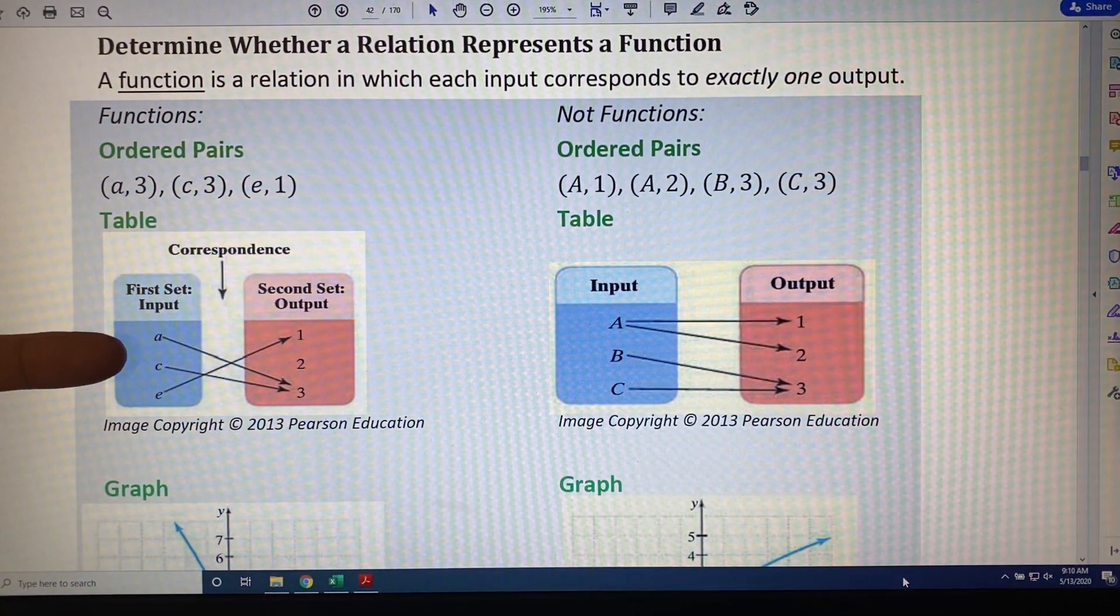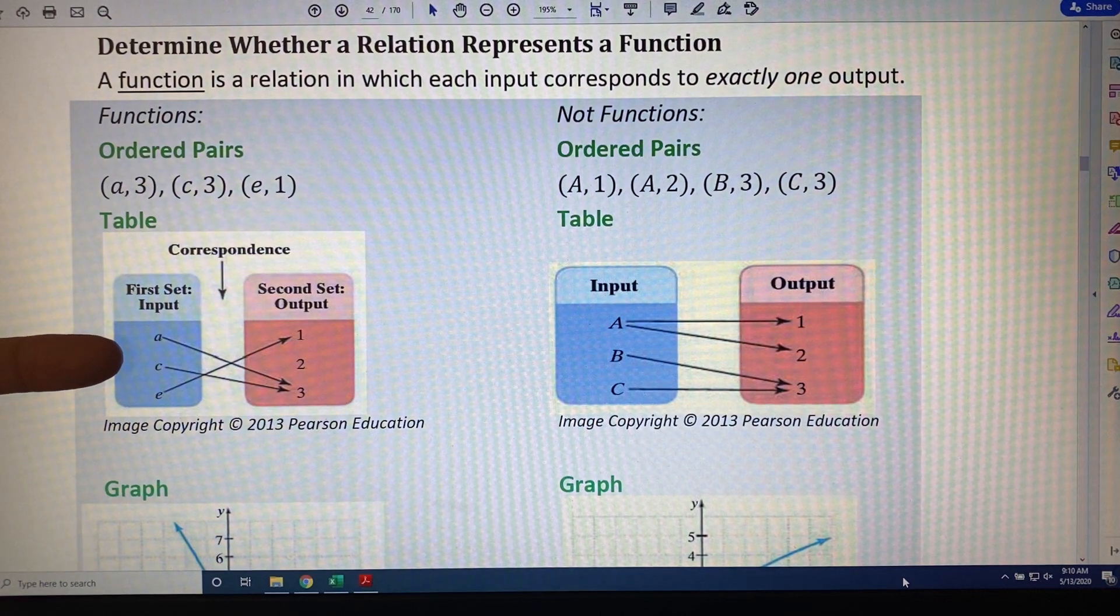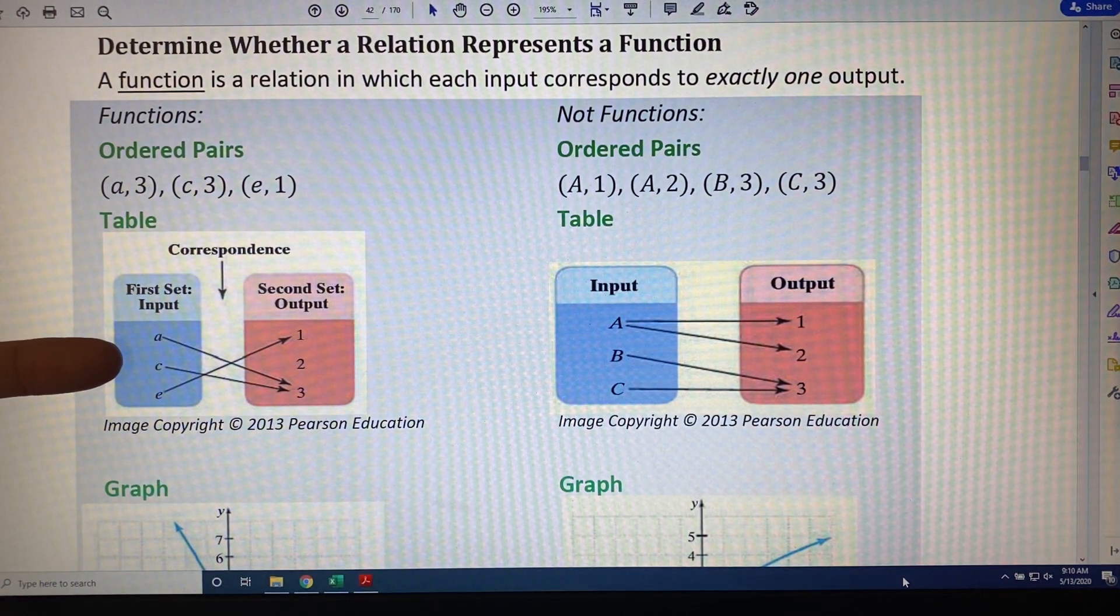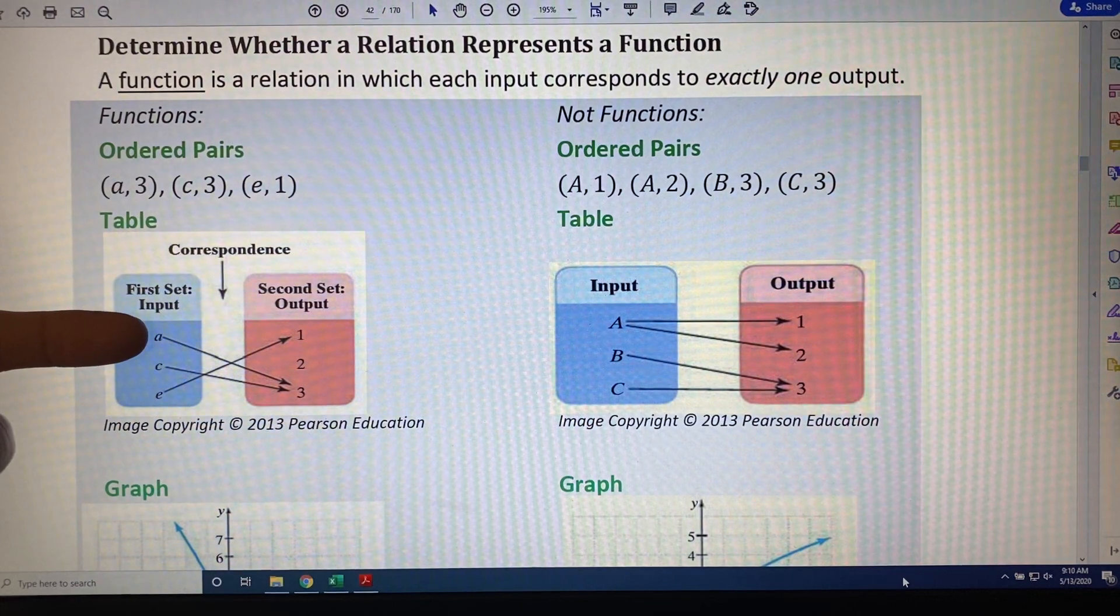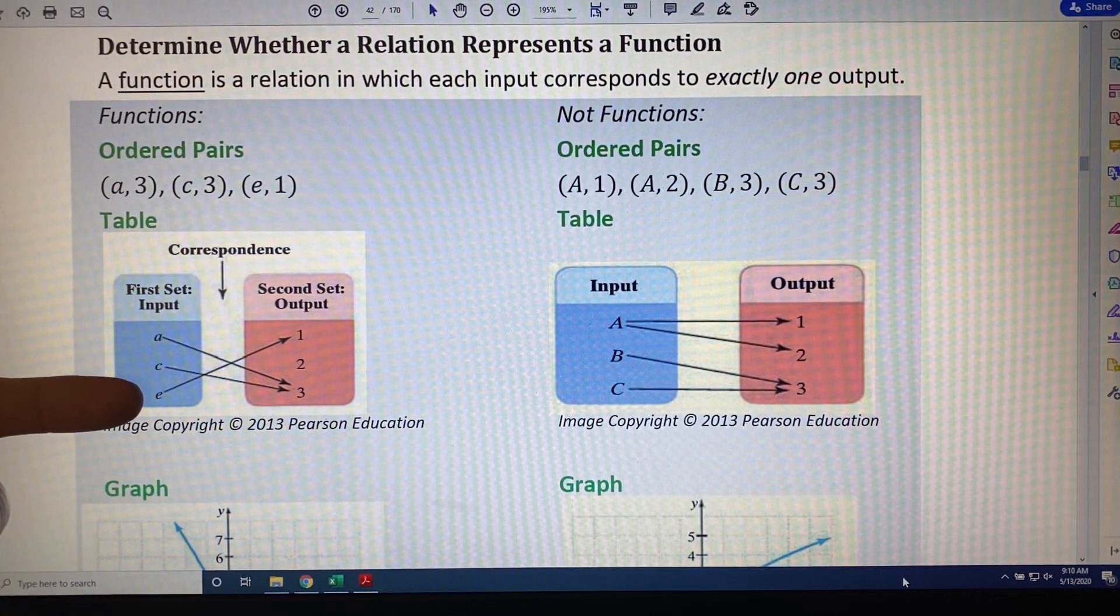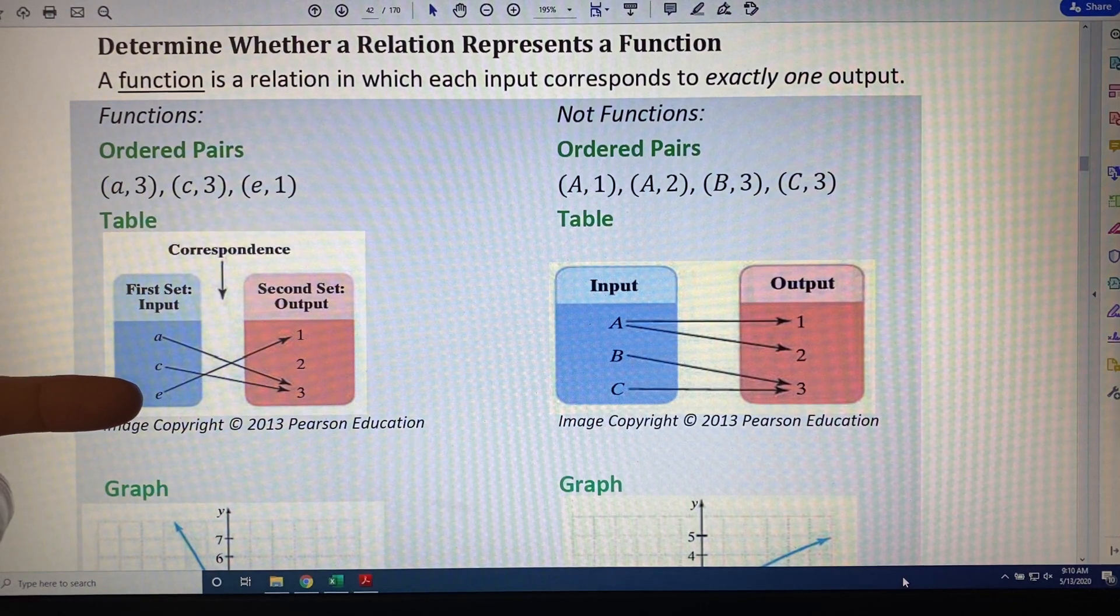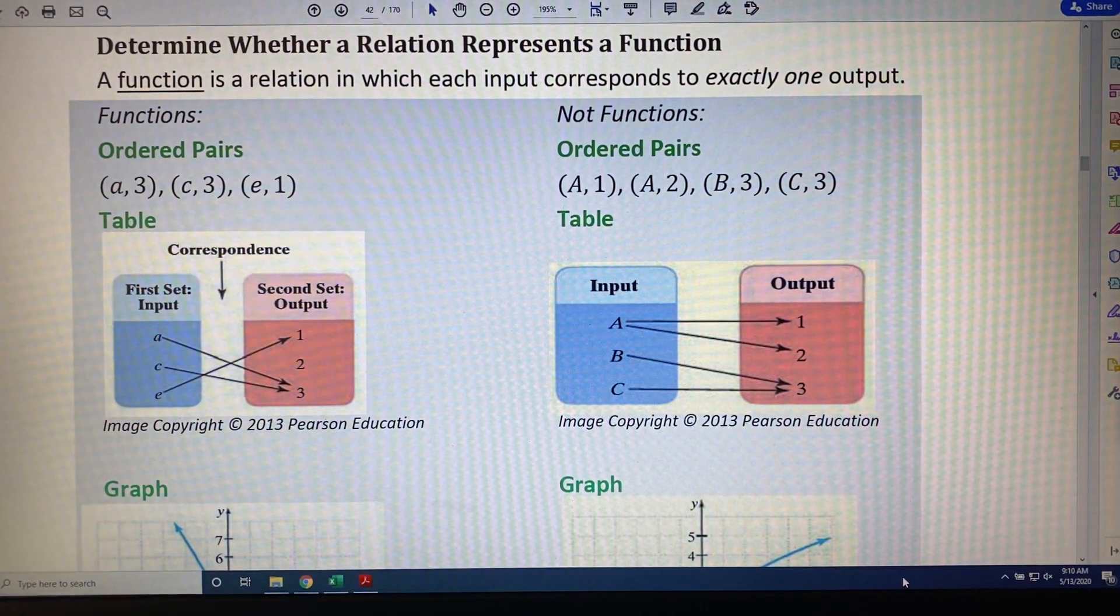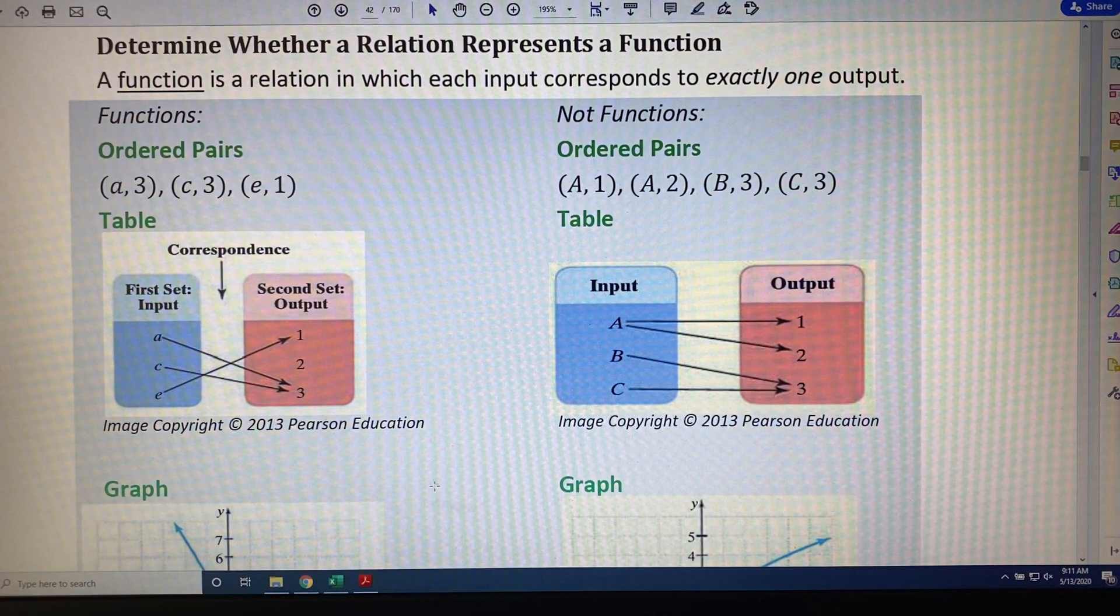This is a function. And the reason why we can quickly and easily see that is by counting the number of arrows that are leaving each input. The number of arrows leaving a is 1, c is 1, e is 1. And since we got 1, 1, 1 all the way down, this meets the definition, and it is a function.